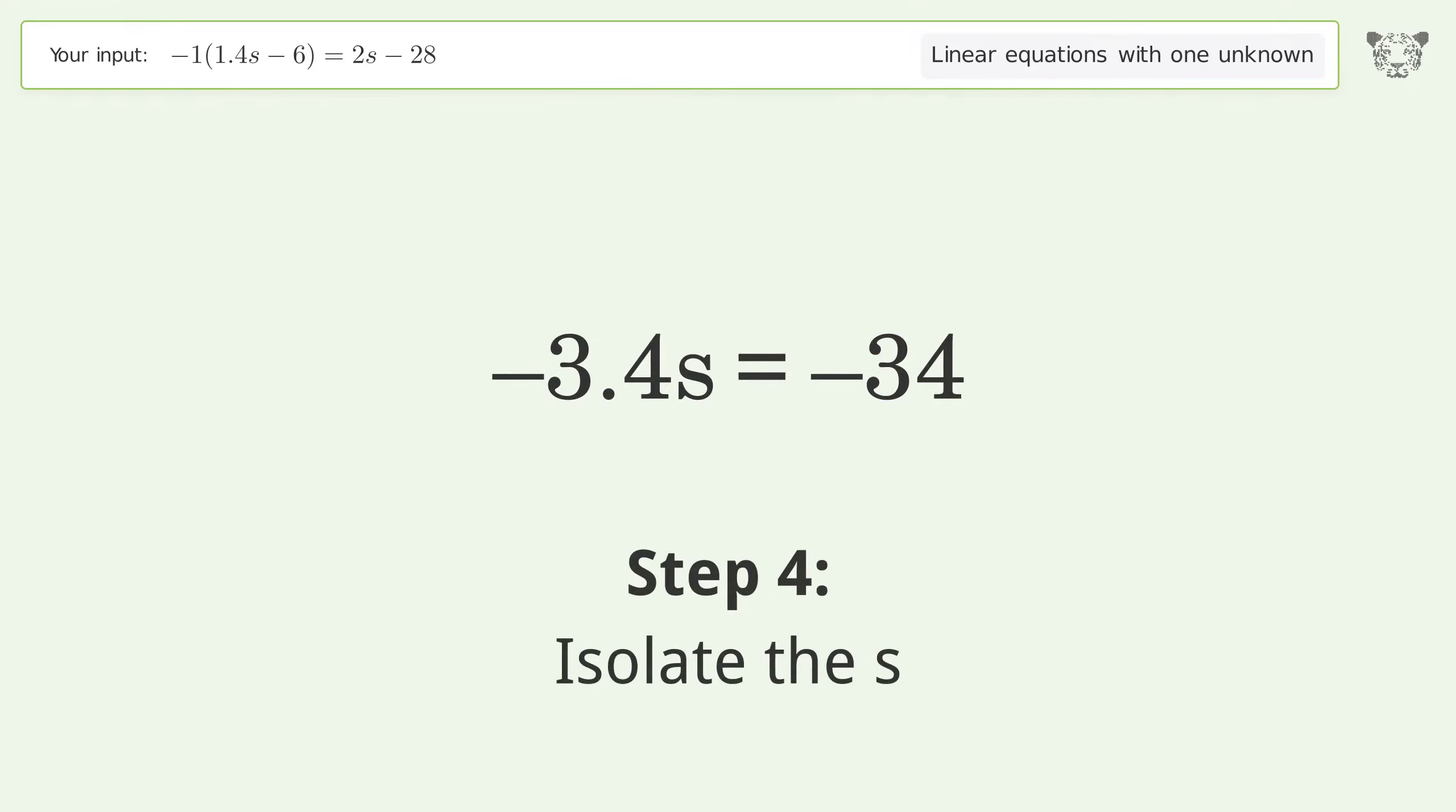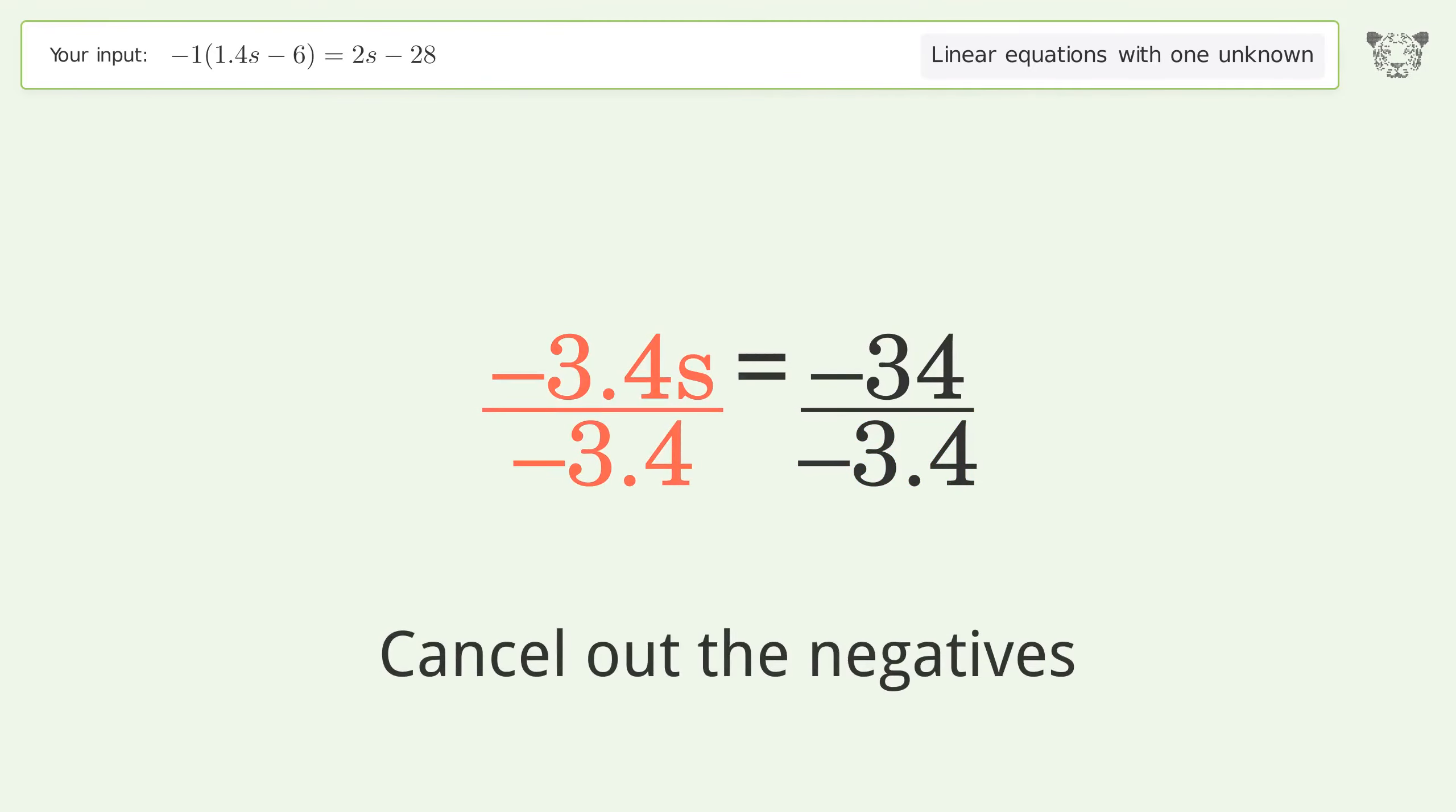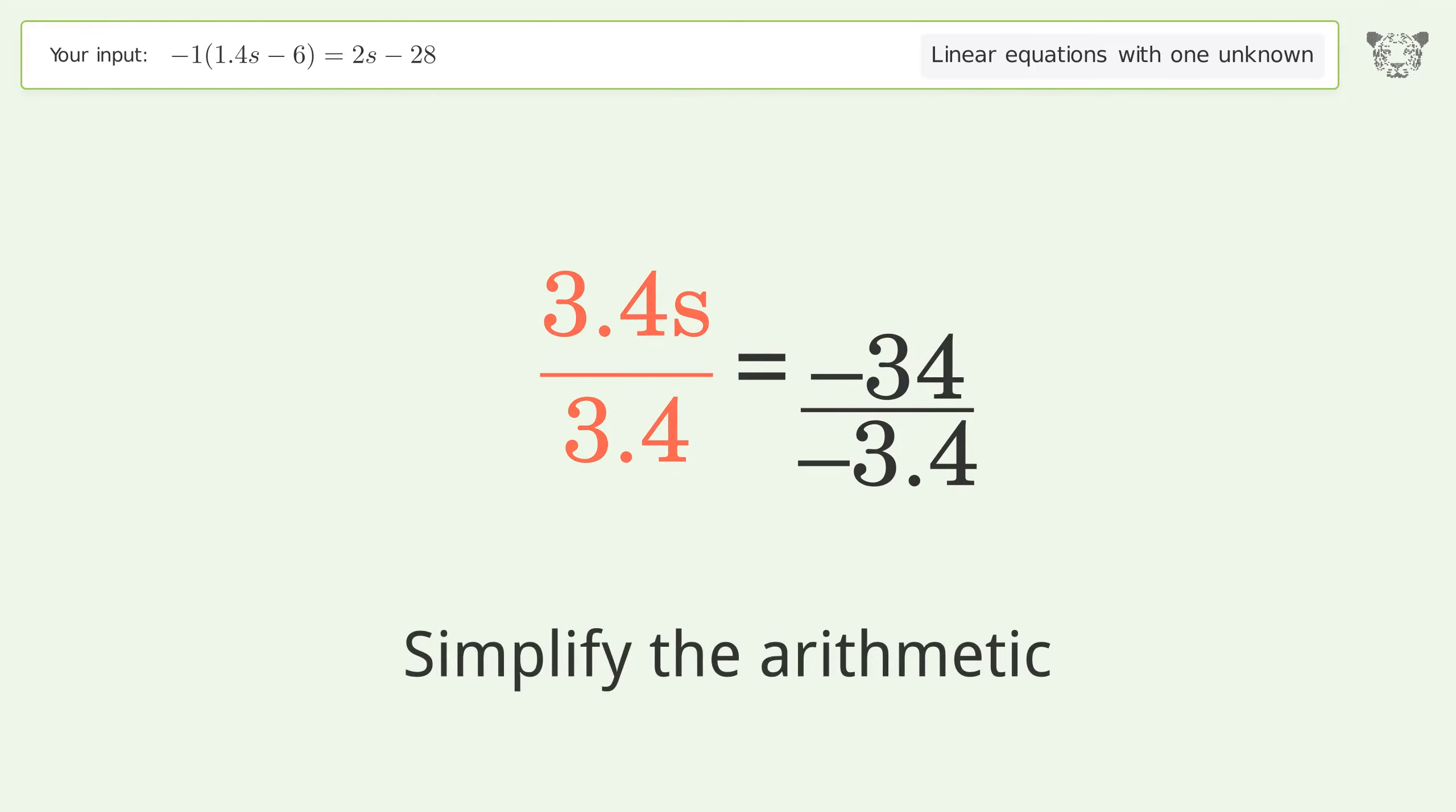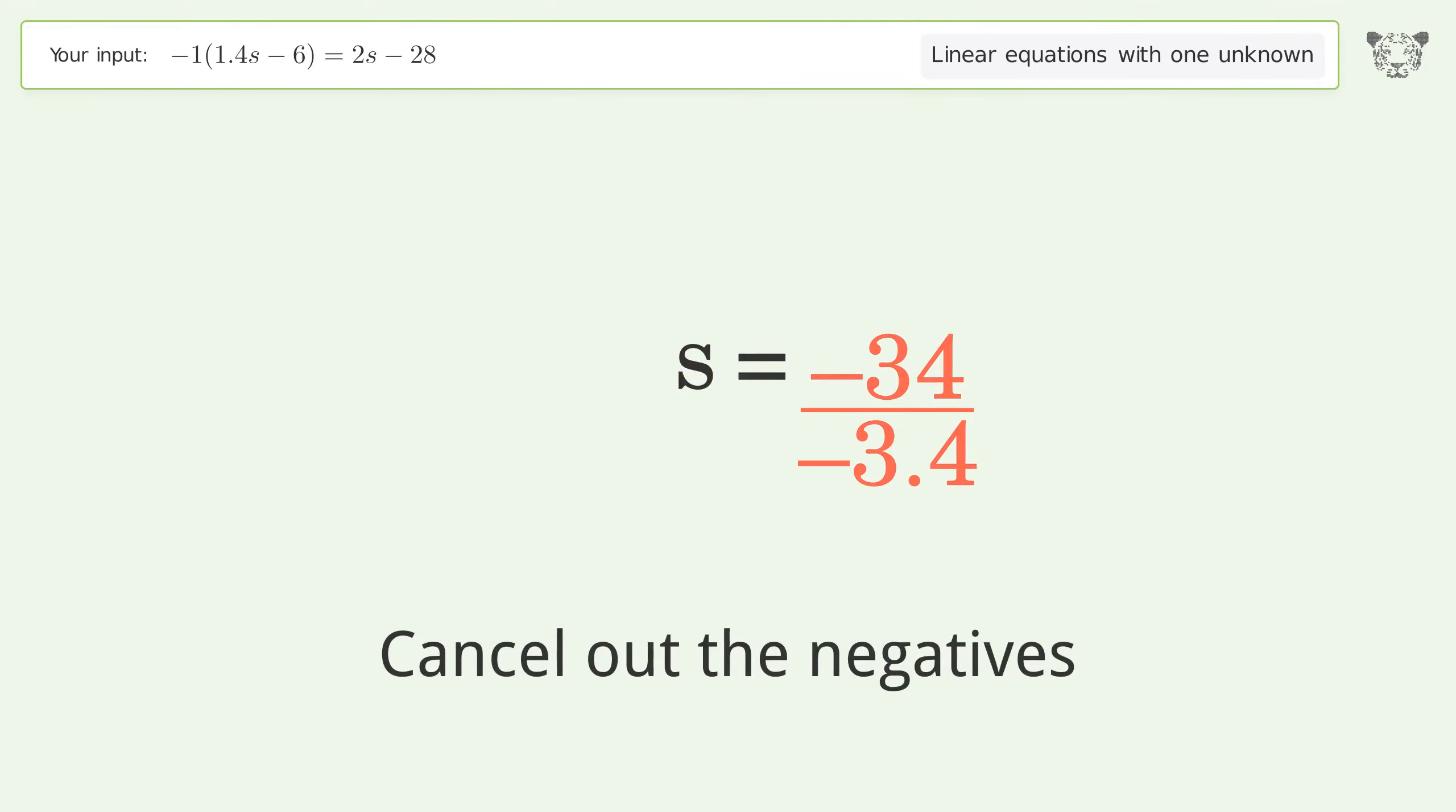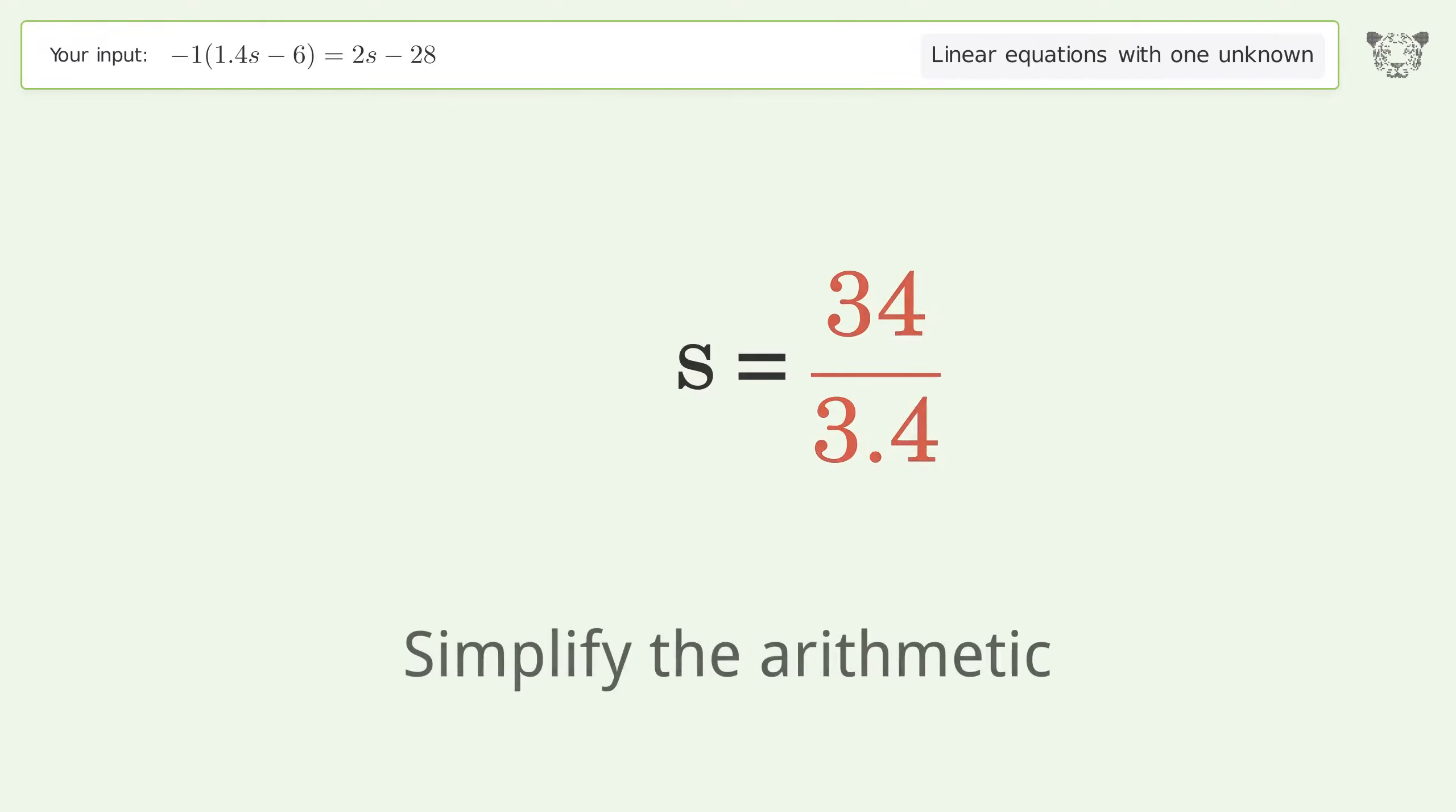Isolate the s by dividing both sides by negative 3.4. Cancel out the negatives, then simplify the arithmetic. Cancel out the negatives again and simplify the arithmetic.